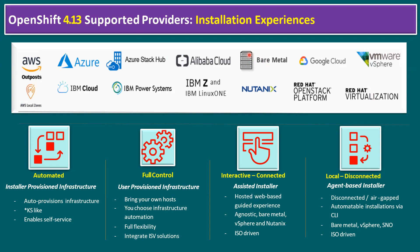Additional supported platforms include Alibaba Cloud, bare metal (installing directly on a physical server with either Red Hat Enterprise Linux CoreOS or Red Hat CoreOS), Nutanix, VMware platform, Google Cloud, Red Hat OpenStack Platform, Red Hat Virtualization, and VMware vSphere. In our lab I previously explained the step-by-step installation method for running OpenShift on VMware vSphere. Now let's understand the key differences between IPI and UPI methods.